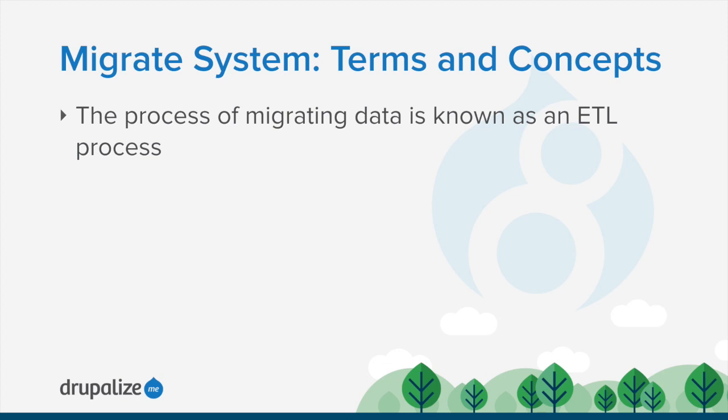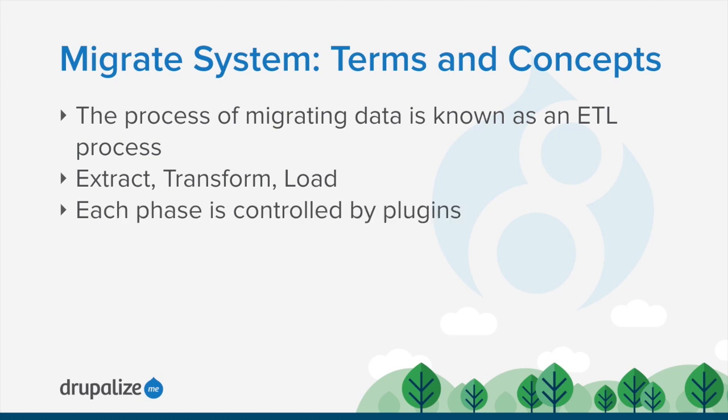The process of migrating data is known as an ETL process, which in computing terms is really talking about data warehousing. ETL stands for Extract, Transform, and Load. In Drupal terms, each of these phases is controlled by plugins — source, process, and destination.